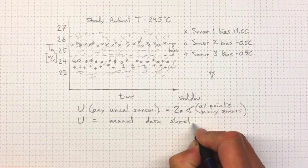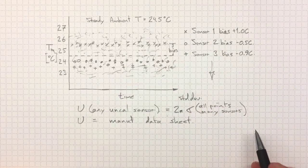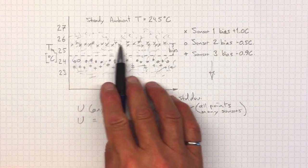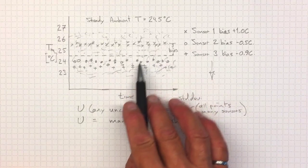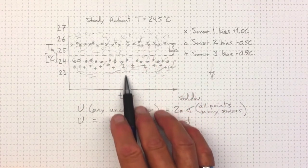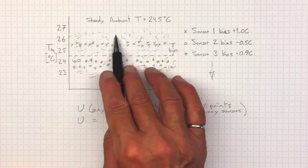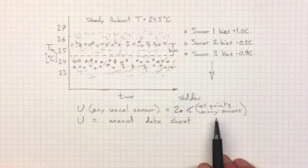It's not just the scatter for any individual sensor. It's the scatter associated with selecting any one of the sensors out of the manufactured collection.